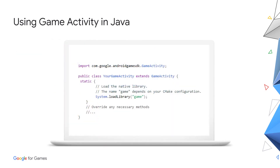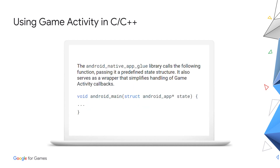So how do you implement Game Activity? First, you need to extend the class GameActivity. You can override any necessary methods of GameActivity here. Don't forget to load your native part using the System.loadLibrary method. The Android native app glue library calls the following function and passes it the preferred state structure. It also serves as a wrapper that simplifies handling of Game Activity callbacks. The android_main function is the analog of Activity in C/C++ code and it takes an android_app struct as a parameter.